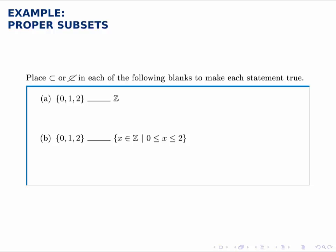So for instance, in the first one, 0, 1, and 2 all come from the integers, and it's not all of the integers, so it is a proper subset.